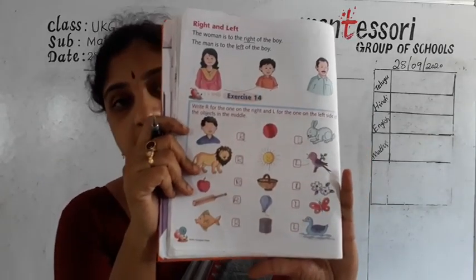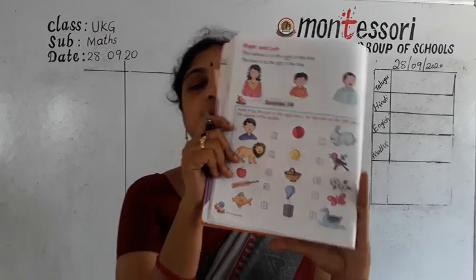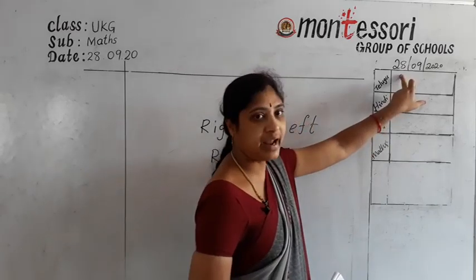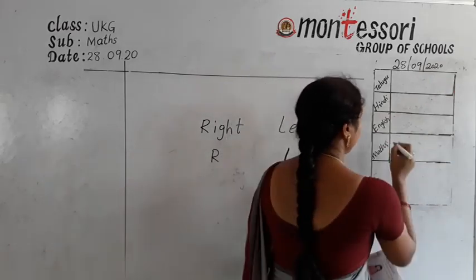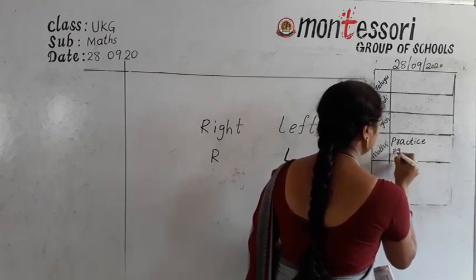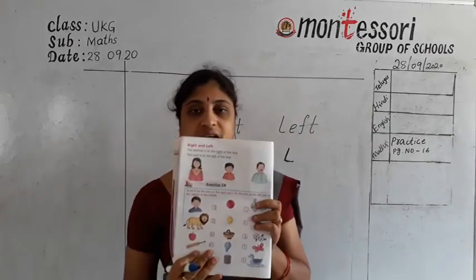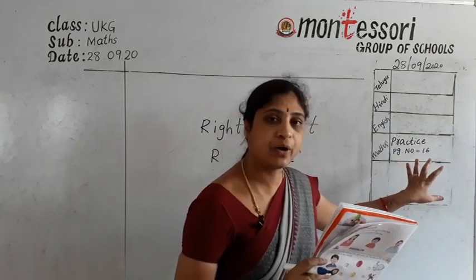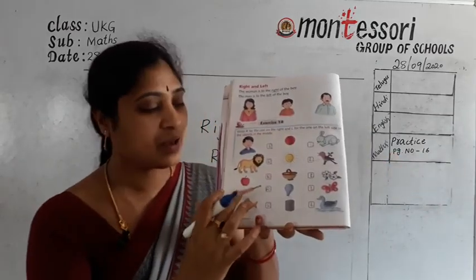After finishing, post to the class teacher. Now open your diary and write: date 28.09.2020, math column — practice page number 16 in rough book. After practice, show to the class teacher.